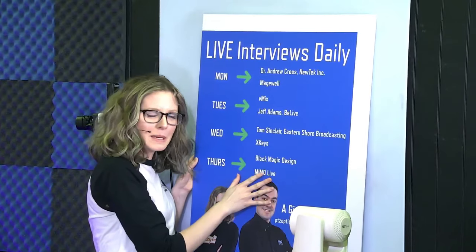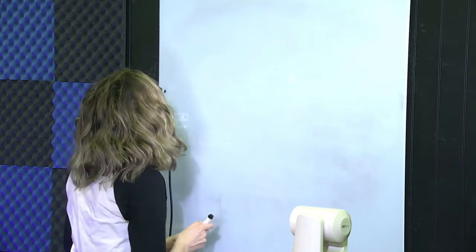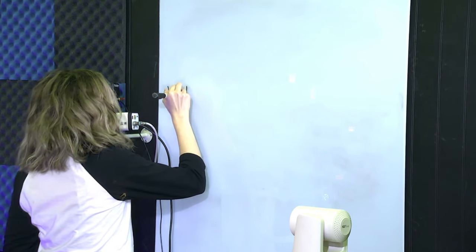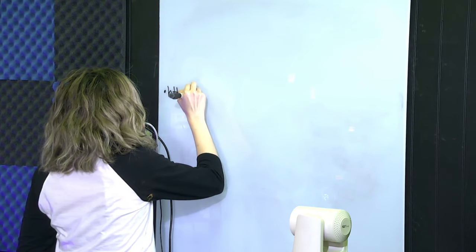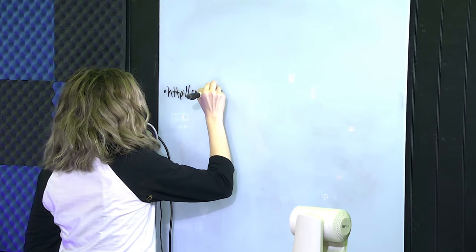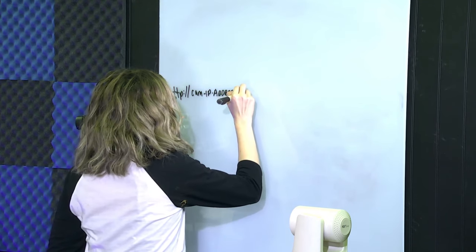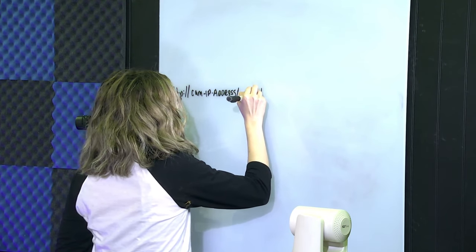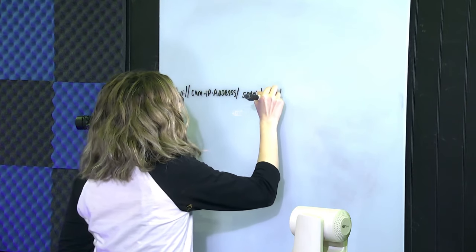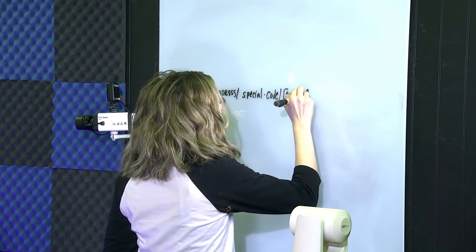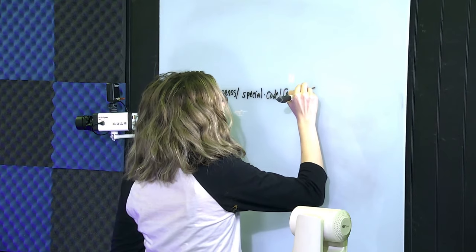So Tess is going to write an HTTP command, which does require the camera's IP address. Tess is writing here: HTTP colon slash slash the camera IP address. Why don't you just put a special code there for the command string? And then there's an action — actions can be all kinds of different things. It could call a camera preset. We'll do pan speed and tilt speed. And then there are multiple variables.